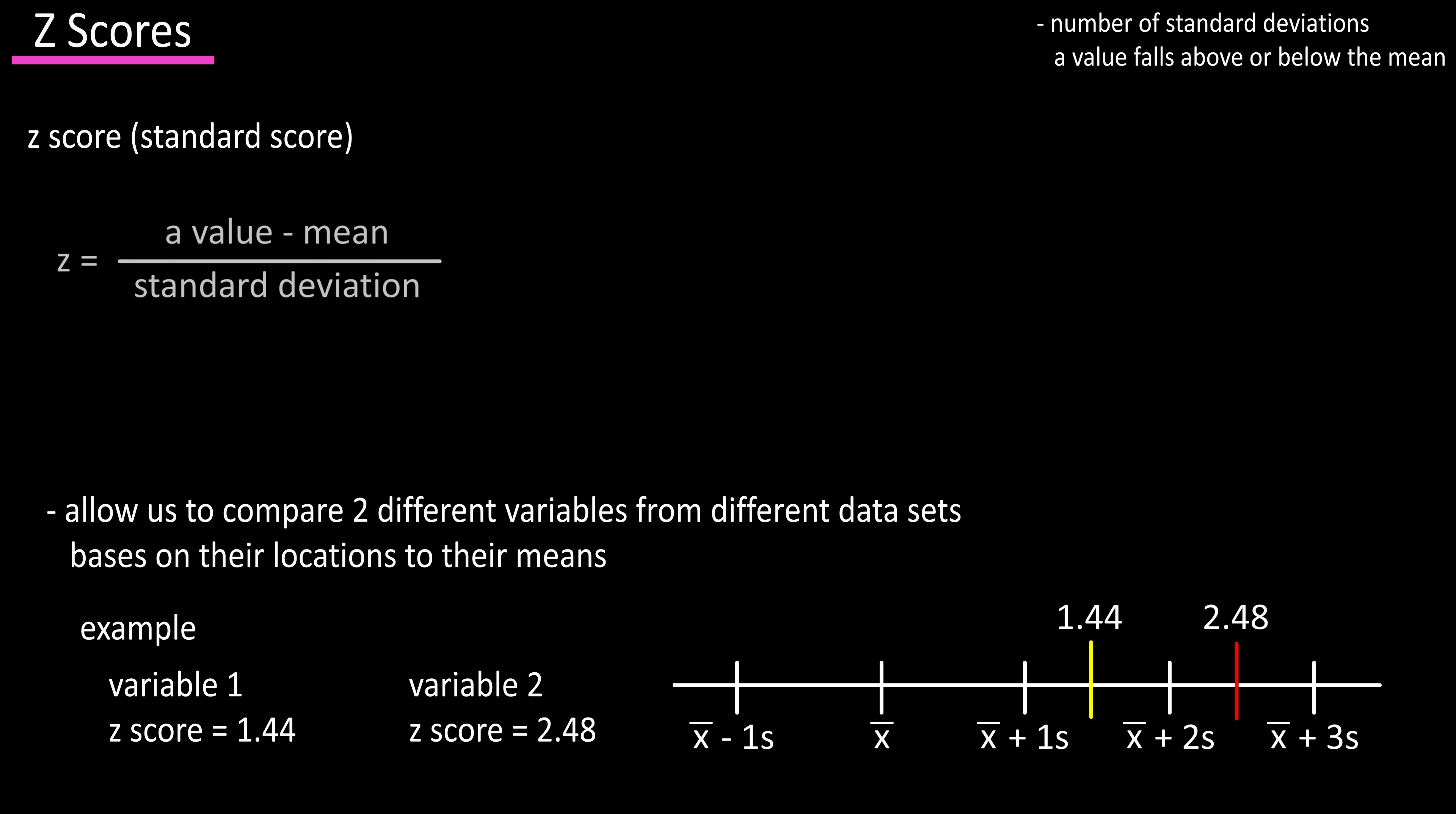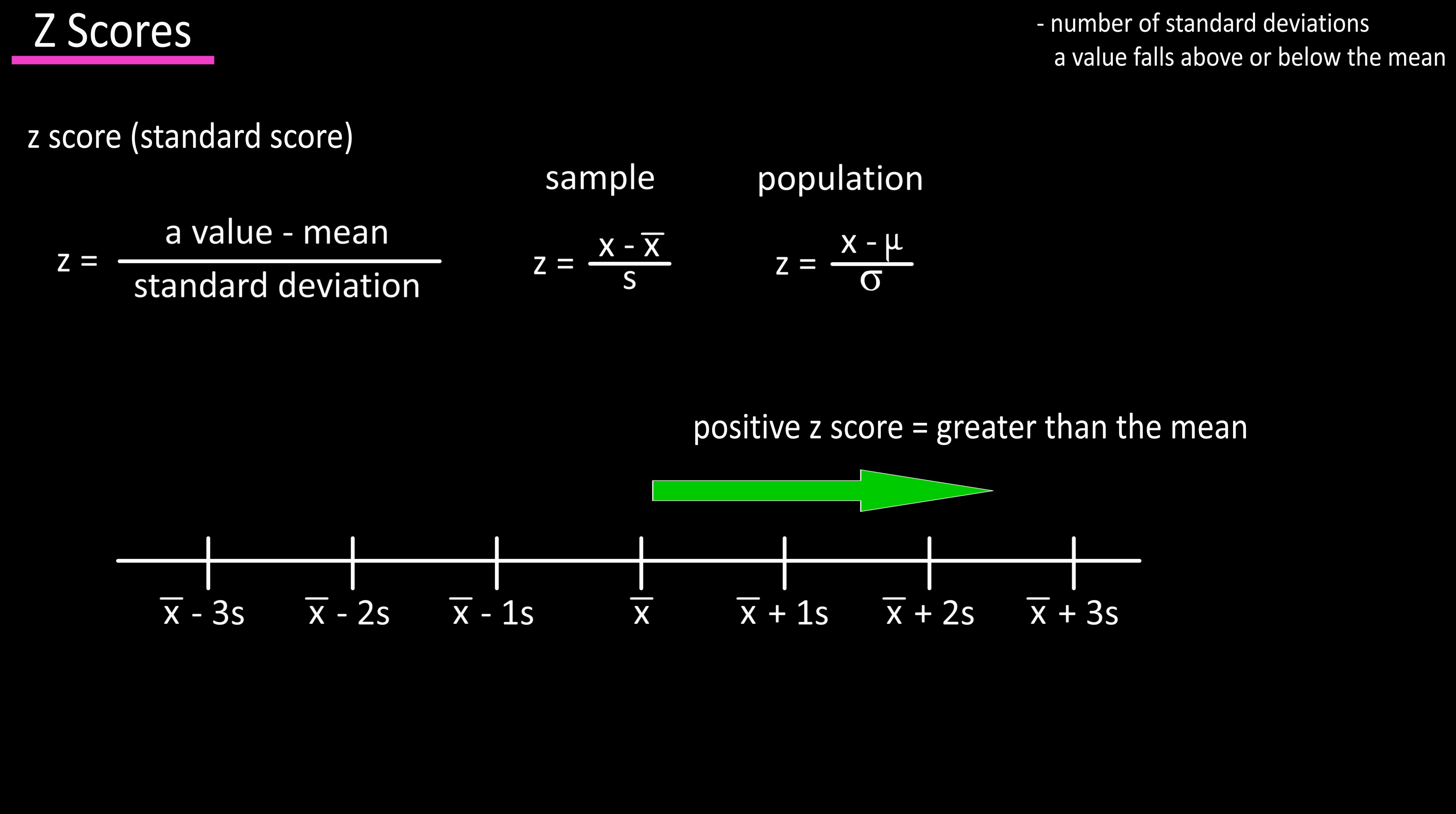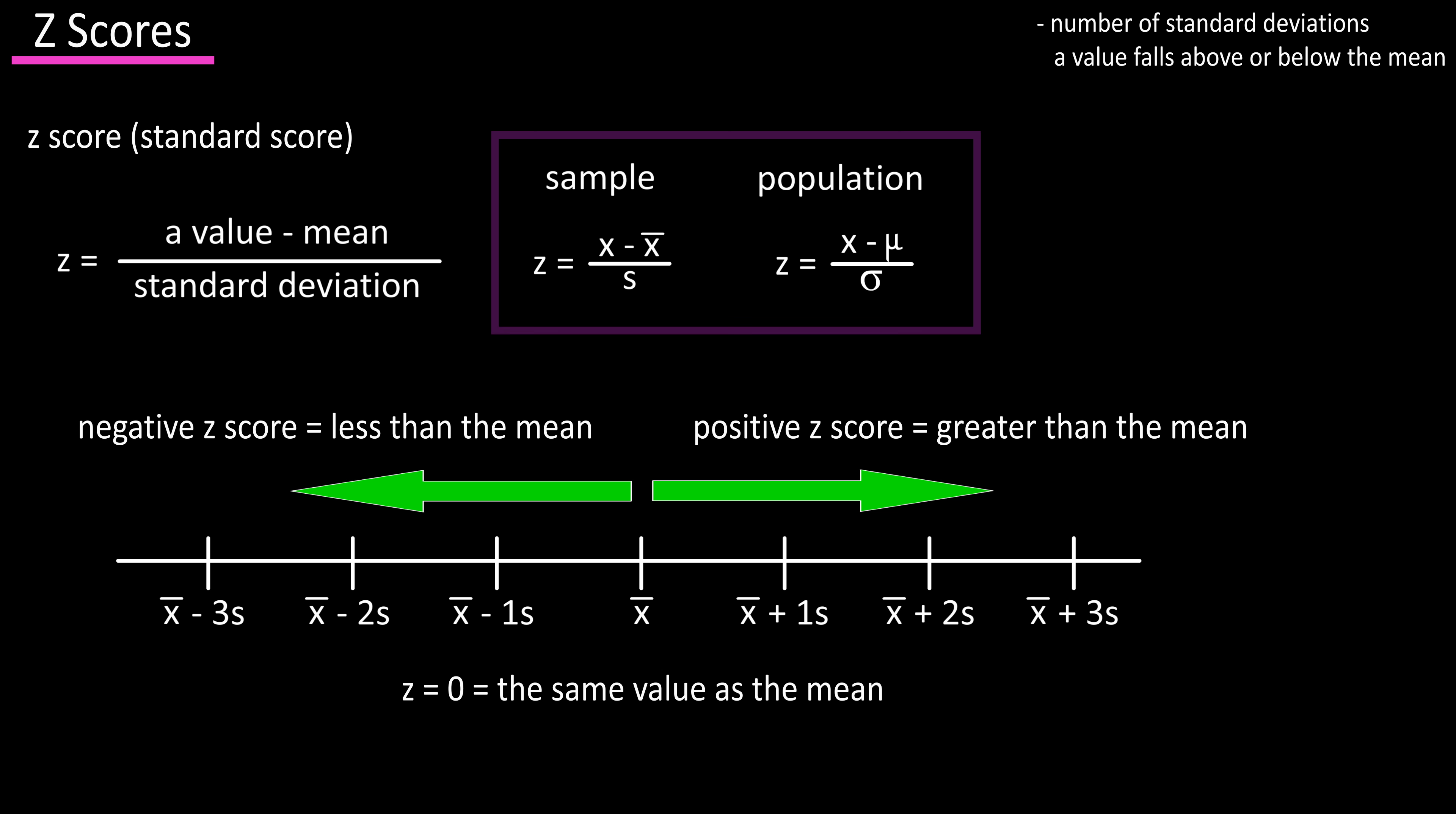The formula for the z-score is z equals a value minus the mean divided by the standard deviation. A z-score with a positive value is above the mean, a negative value is below the mean, and a z-score of zero means it's equal to the mean. On the screen is the formula for both samples and populations.